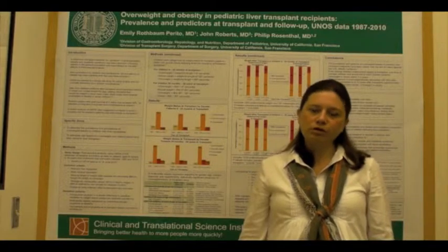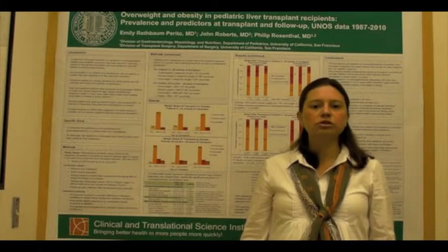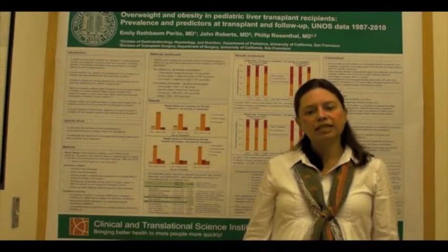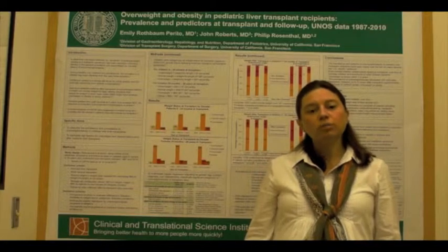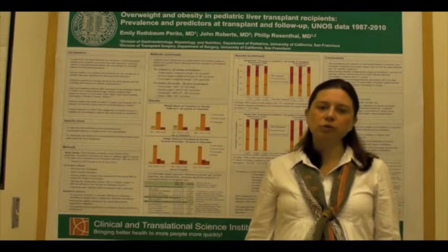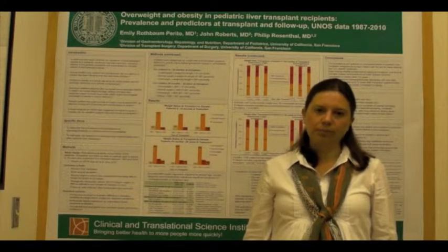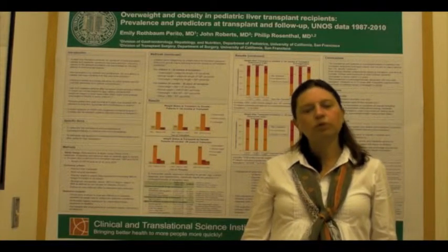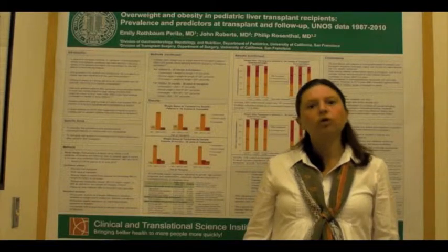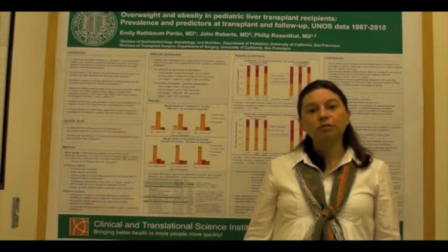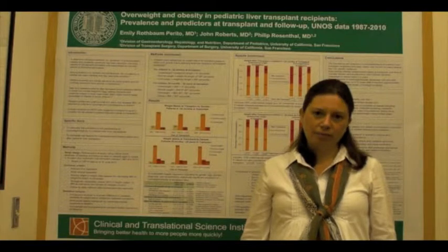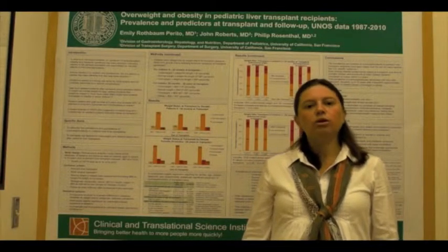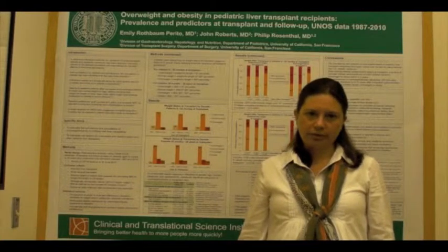We performed a retrospective analysis using the UNOS-TAR database, which includes information on all liver transplants performed in the United States between 1987 and 2010. We included patients who were 6 months to 20 years of age at transplant during the study period. We excluded patients who had undergone previous liver transplant, were undergoing multivisceral transplant, or had missing or biologically implausible values of weight or height data needed to calculate BMI percentile and weight-for-height percentile. In the follow-up data, we excluded data collected after patients were re-transplanted.